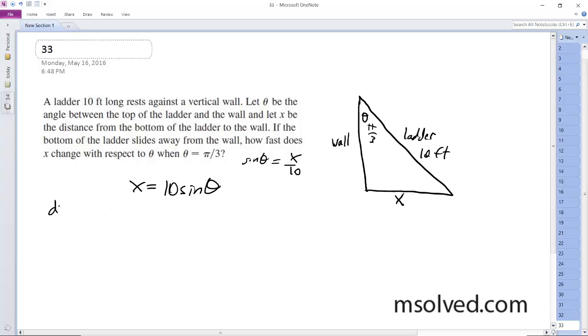So we want to find the derivative because that's how we find the exact change wherever it is, because it's always changing. So dx d theta is going to be equal to 10 cosine theta.